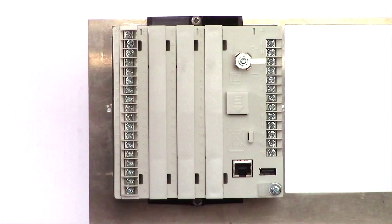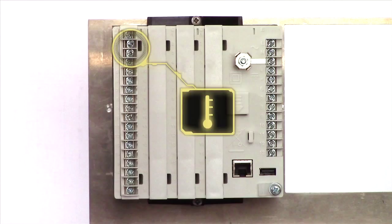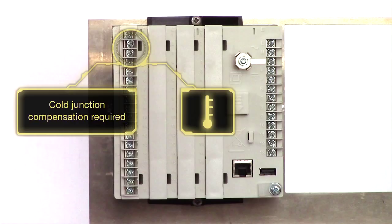When measuring a thermocouple you must take into account the temperature at the point where the thermocouple meets the terminals. This is called the cold junction compensation and if not accounted for correctly it can affect the displayed reading on the recorder.